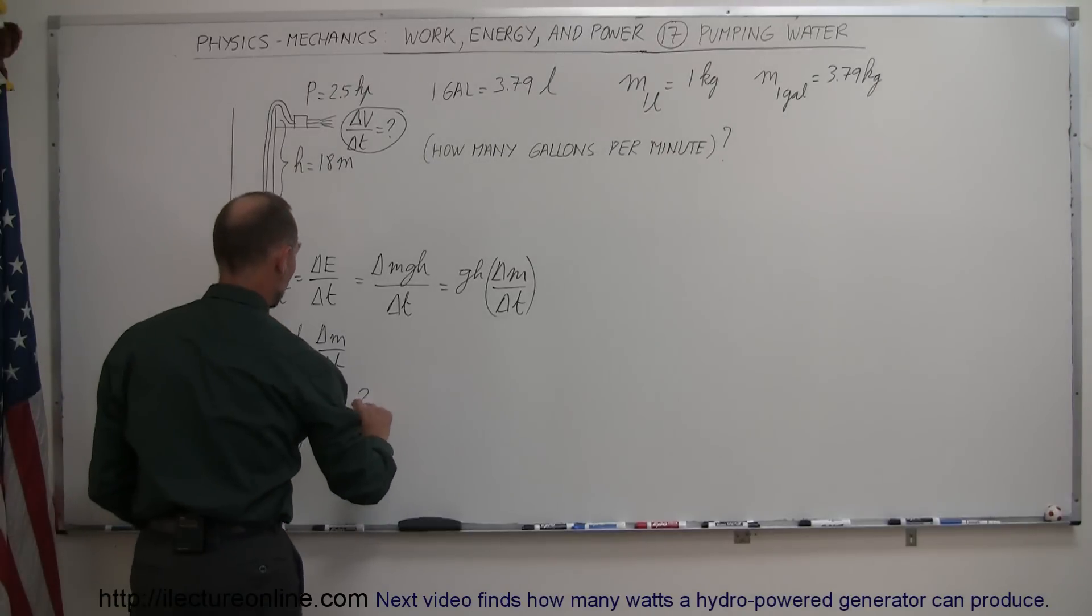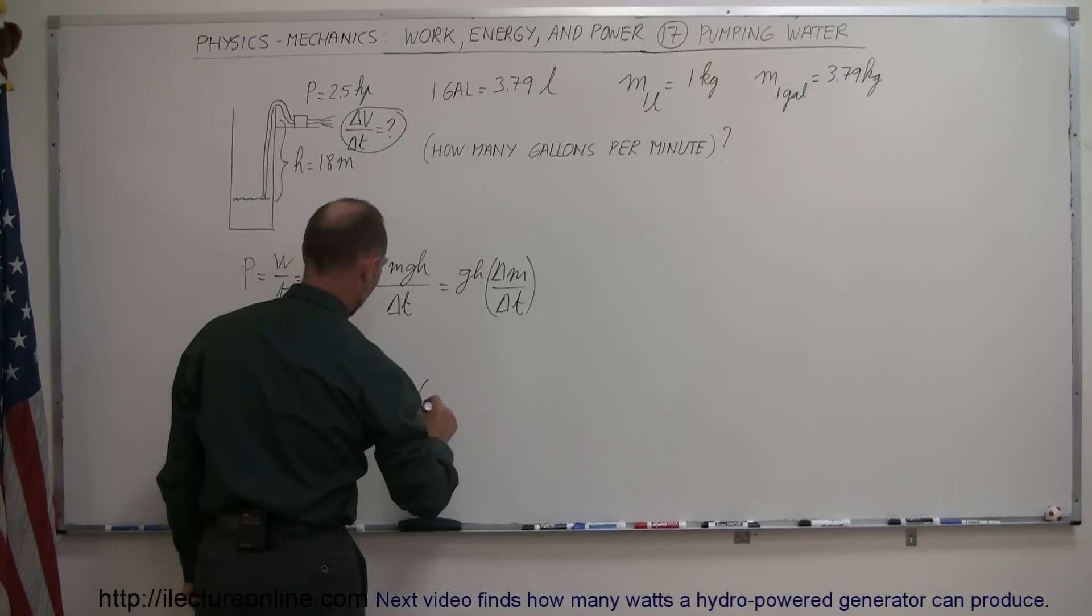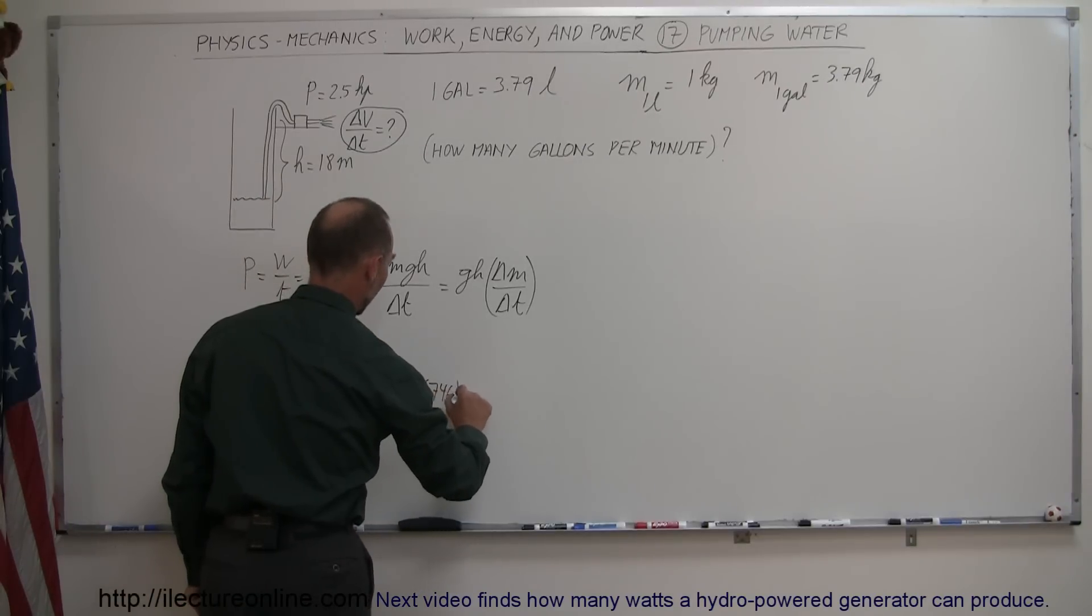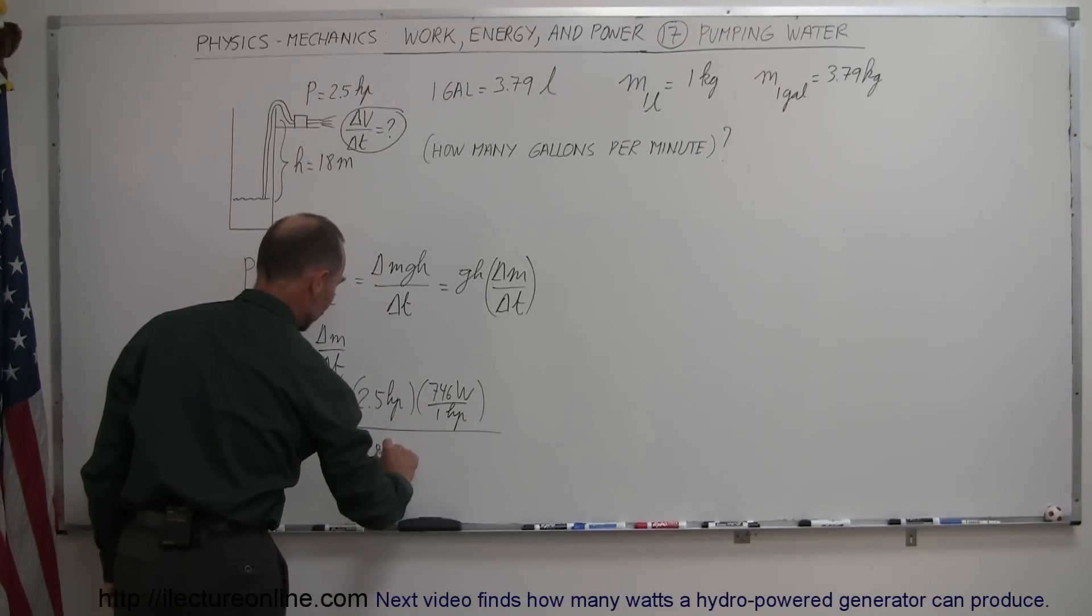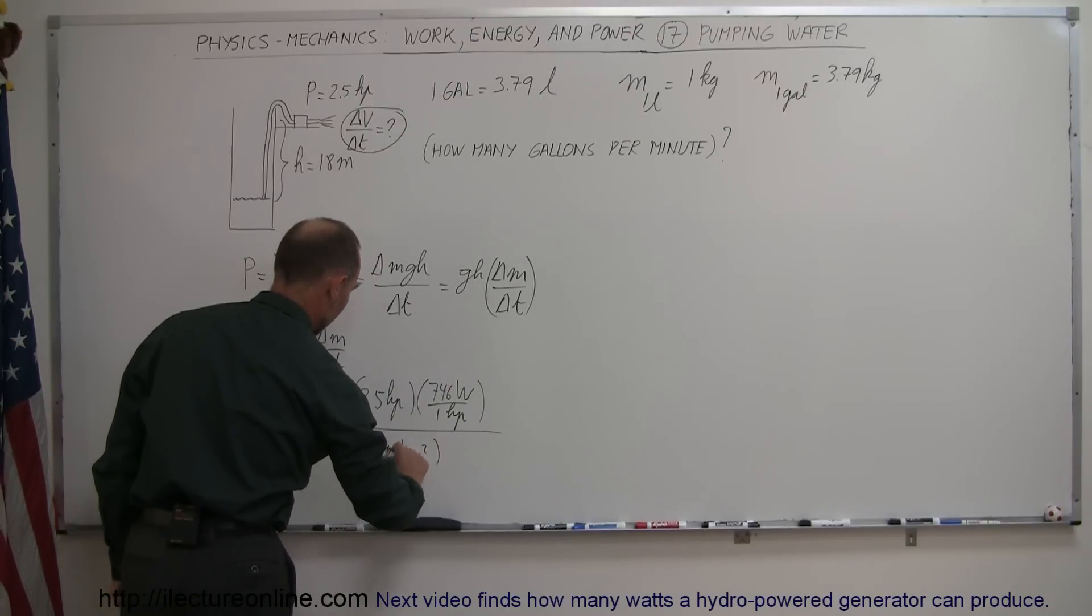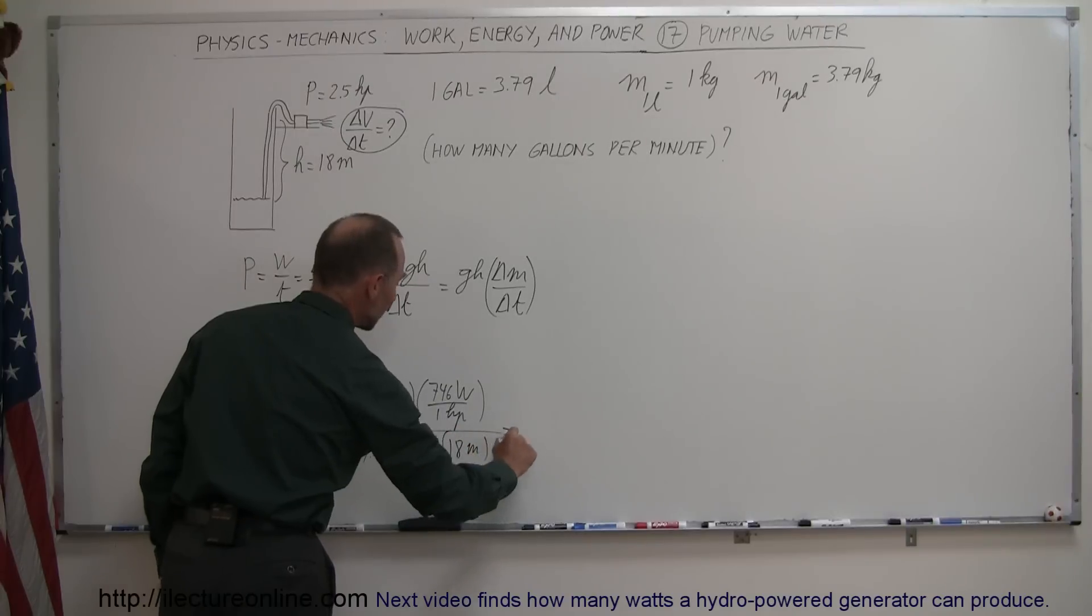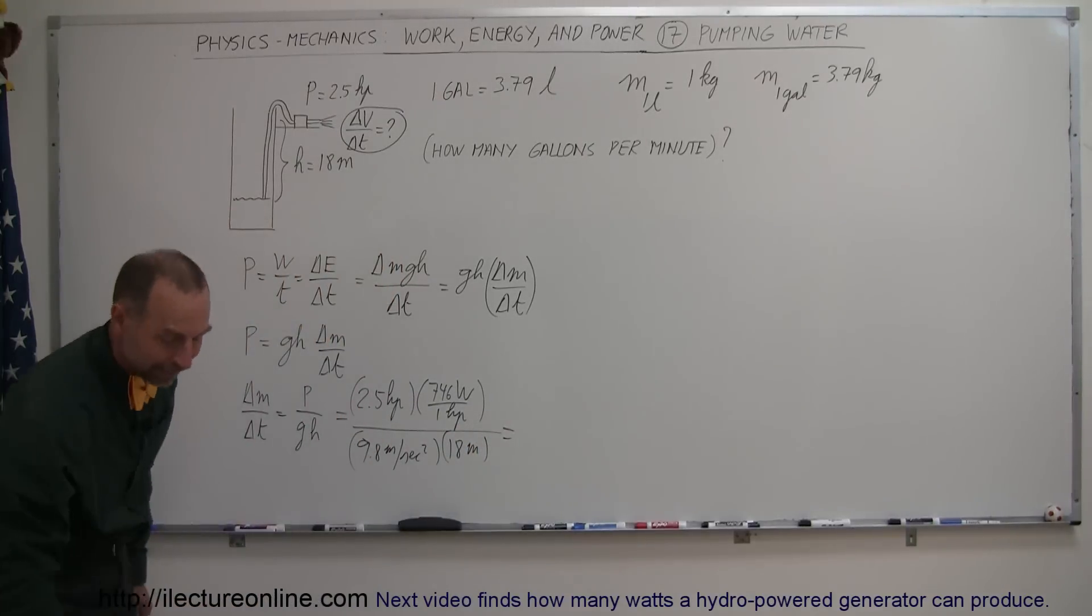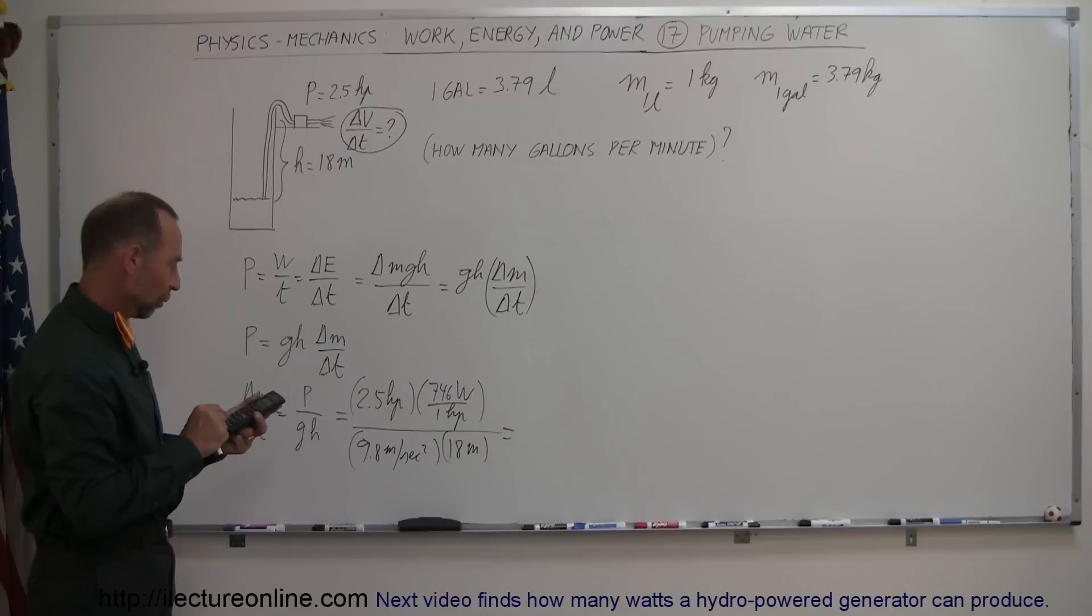All right, we have 2.5 horsepower, and of course we want to convert that to watts. So that would be 746 watts per one horsepower. And divide the whole thing by G, which is 9.8 meters per second squared, and finally H, which is 18 meters. And that will give us the amount of mass of water in kilograms that we can lift out of that well with a pump of 2.5 horsepower.